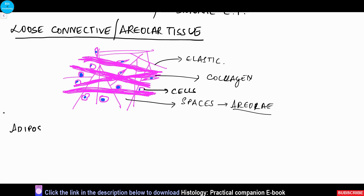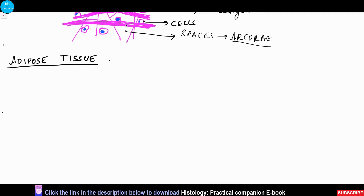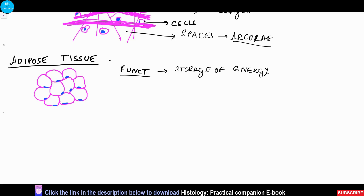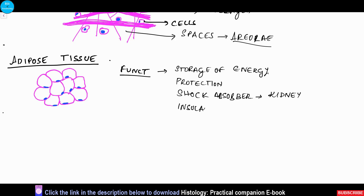The next type is adipose tissue, which contains large amounts of adipose cells with minimal fibers and minimal matrix. Individual cells are round, but in adipose tissue they appear polygonal with a peripherally situated flat nucleus and a central empty space where the fat globule is present in the living state. Its functions include storage of energy as fat, protection of organs as a shock absorber — especially peri- and pararenal fat around the kidney — insulation of the body, and giving shape to the body.